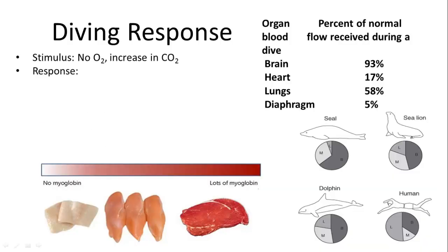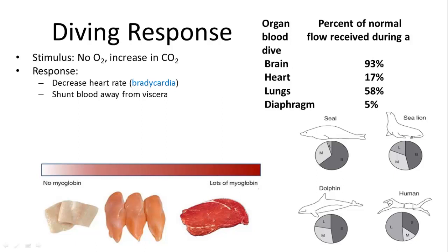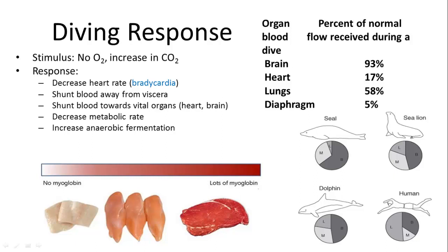The diving response is seen in most diving animals, especially mammals. The stimulus is not just a decrease in oxygen but more importantly an increase in carbon dioxide in the blood, signaling a need for more oxygen. The response includes: decreased heart rate, blood shunted away from the viscera, blood shunted towards vitals such as the heart and brain, decreased metabolic rate, increased anaerobic fermentation, and use of oxygen stores in hemoglobin in the blood, myoglobin in muscles, and stores in the lungs and spleen.